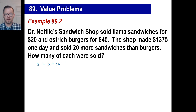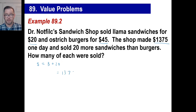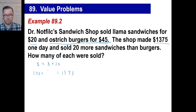The shop sold 20 more sandwiches than burgers, so S equals B plus 20 — that's your first equation. The second equation figures out the whole total using the different values, just like 25 cents for a quarter and 10 cents for a dime. Sandwiches are $20, so 20 times S, plus burgers at $45, so 45 times B equals $1,375.